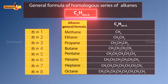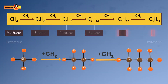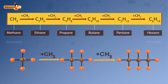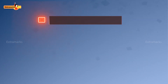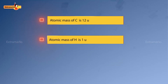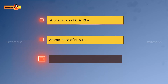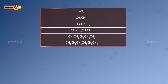Notice that the successive members of the homologous series differ by a CH₂ unit. The atomic mass of a carbon atom is 12u and that of a hydrogen atom is 1u. So we can say that the successive members of a homologous series differ by 14u.